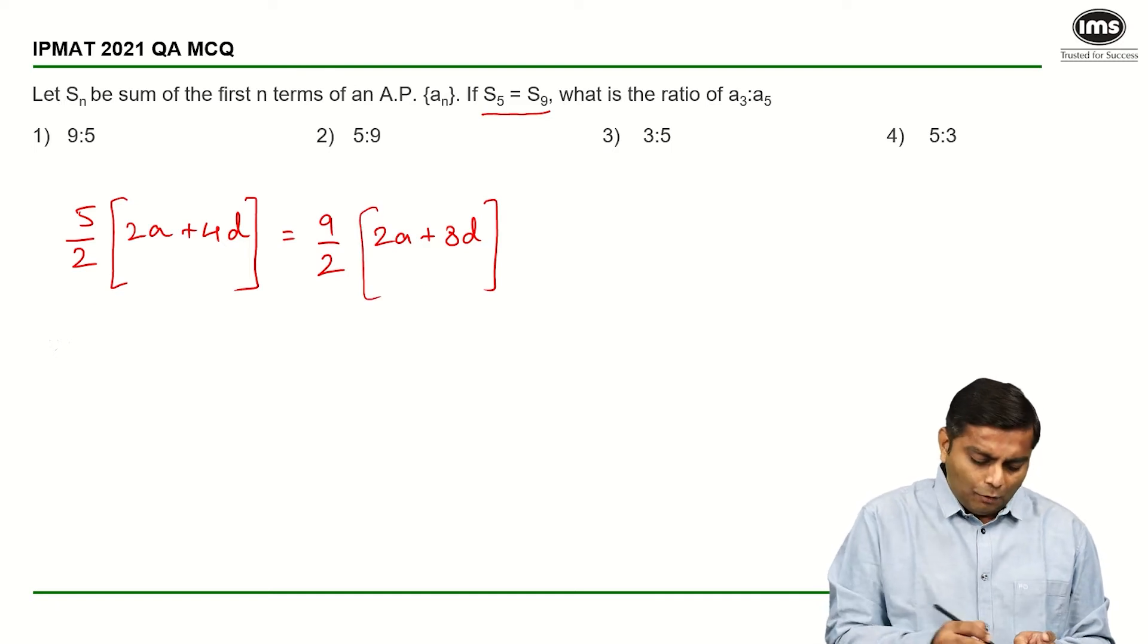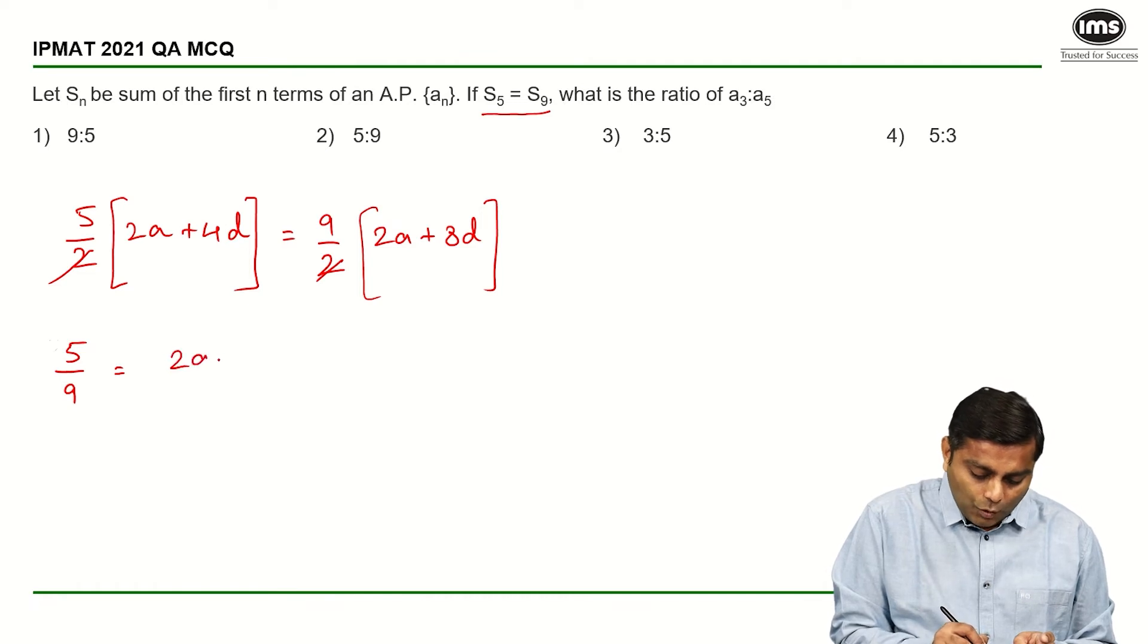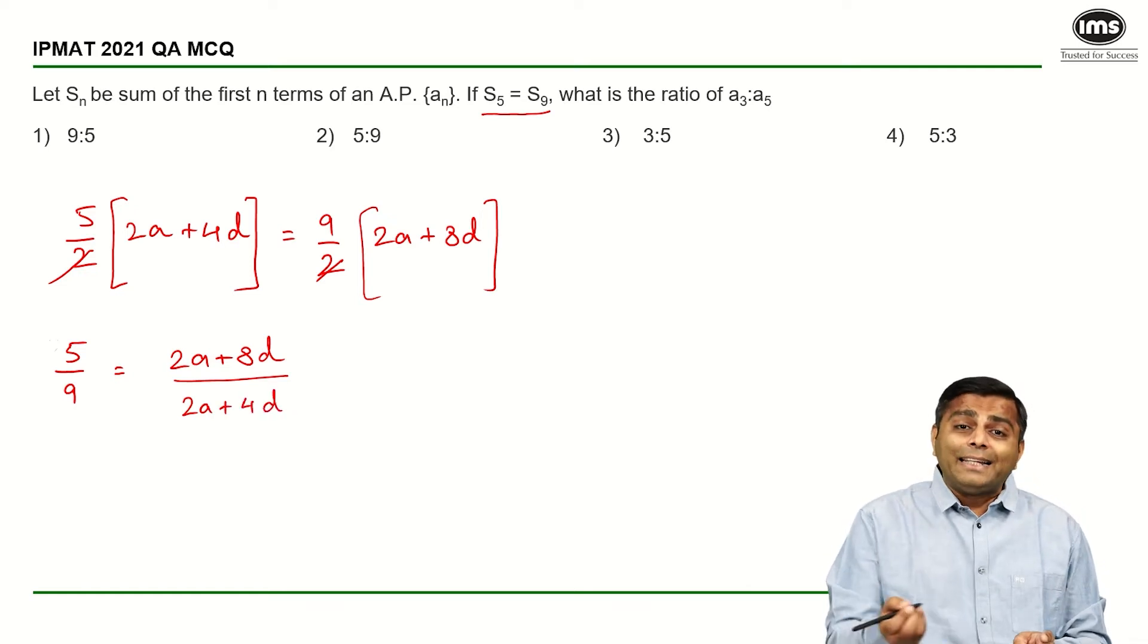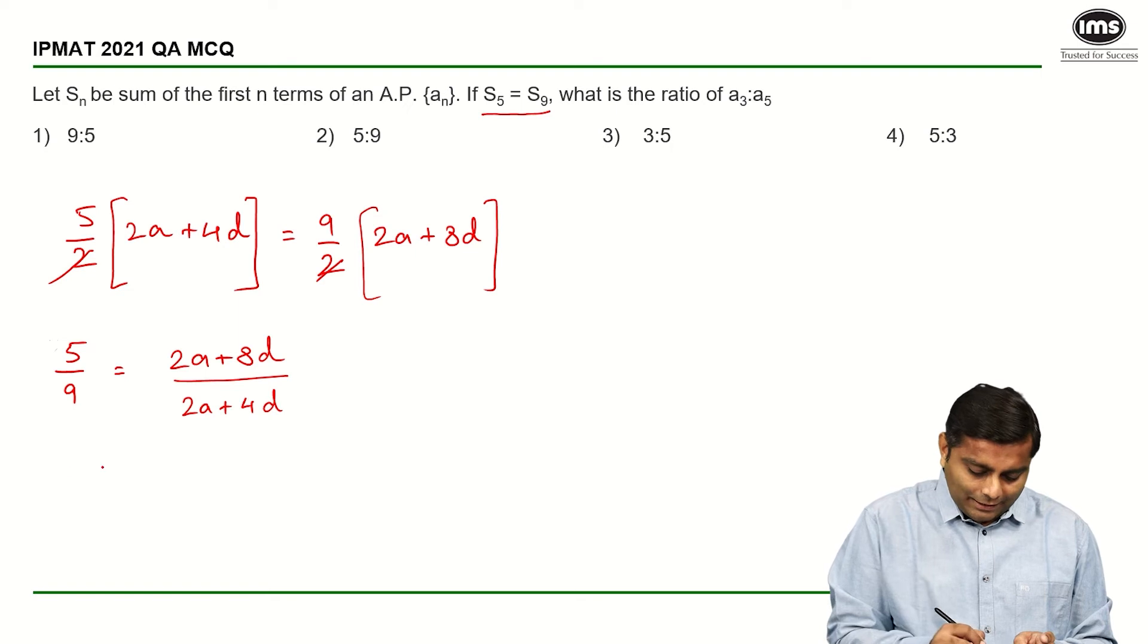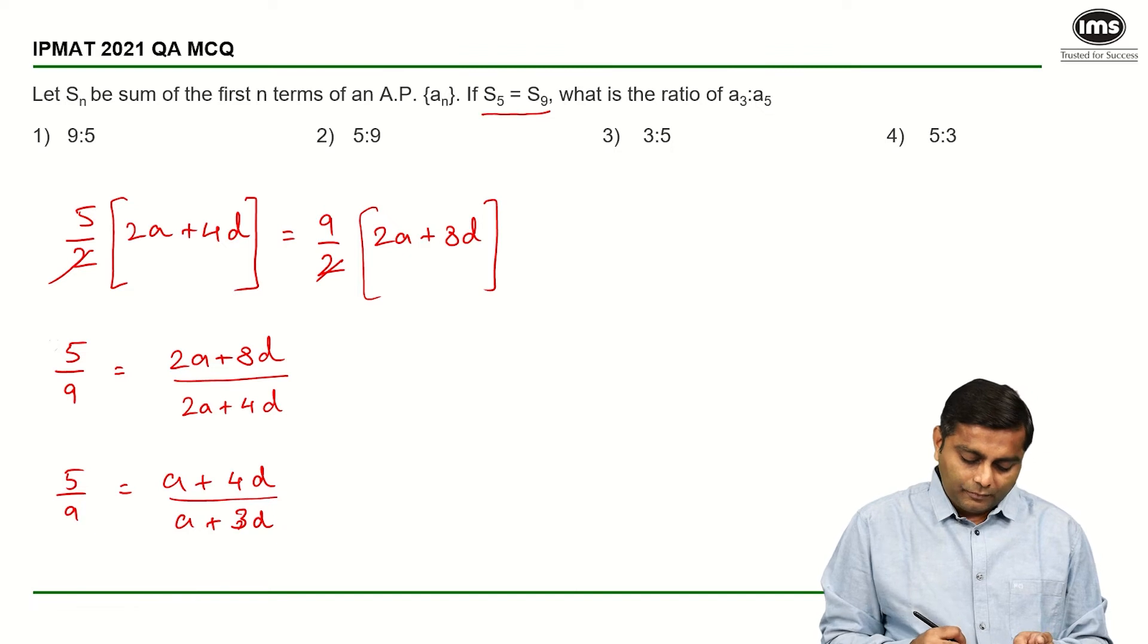This is what is given. We can obviously cancel 2 here. And I can say 5 by 9 is equal to 2A plus 8D upon 2A plus 4D. On the right hand side, we can take 2 common and cancel it out. So we have 5 by 9 is equal to A plus 4D upon A plus 2D.